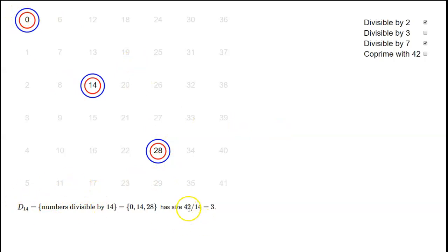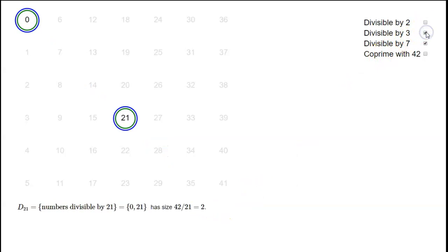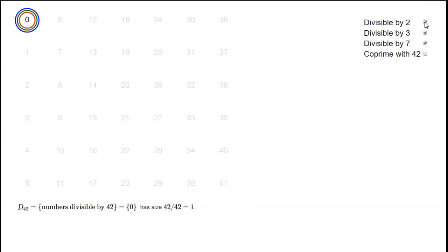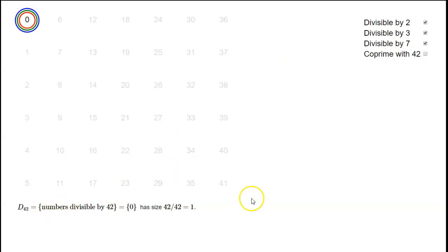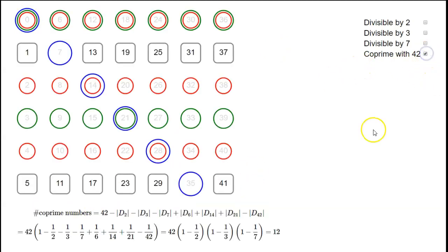Similarly, D21 has size 42 over 21, which is 2. Finally, for the triple intersection — numbers divisible by 2, 3, and 7 — that's the same as being divisible by 42. But our range stops at 41, so the only number in this range divisible by 42 is 0. So D42 has size 1.